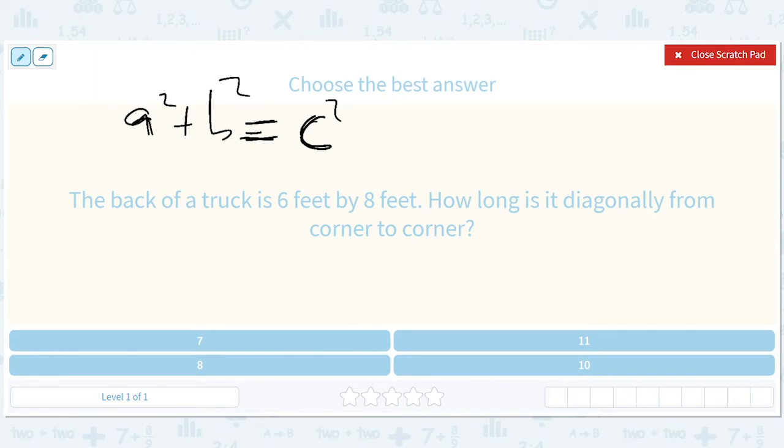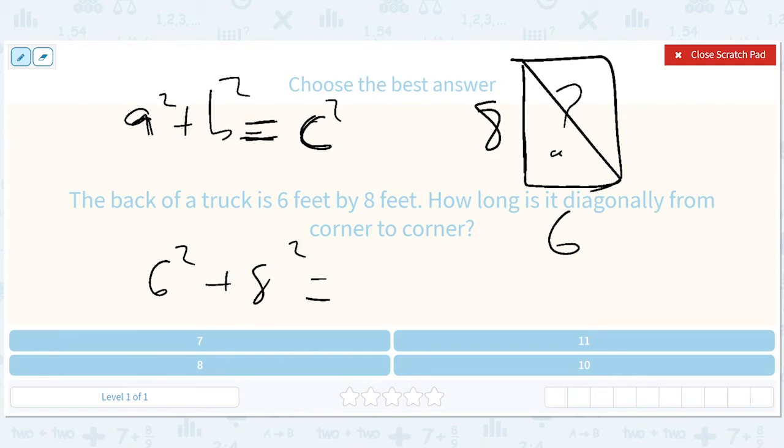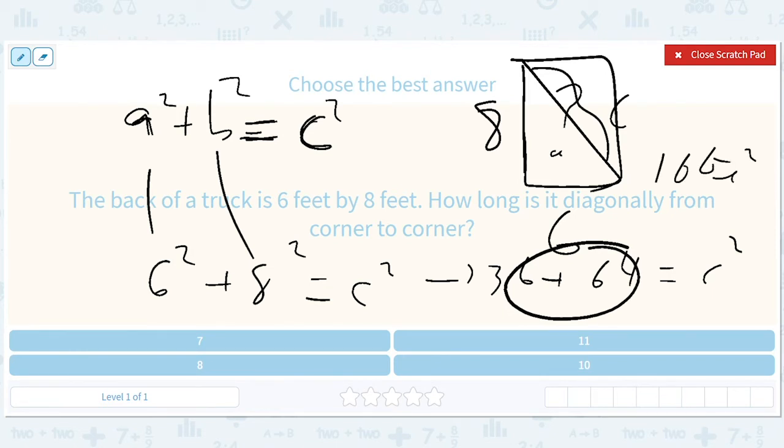The base of the truck is six feet by eight feet. How long is it diagonally? So we've got this picture where this is six and this is eight, and we're trying to figure out what this is. The idea is six squared plus eight squared equals c. So we get 36 plus 64 equals c squared, which is just 100 equals c squared, where c equals 10.